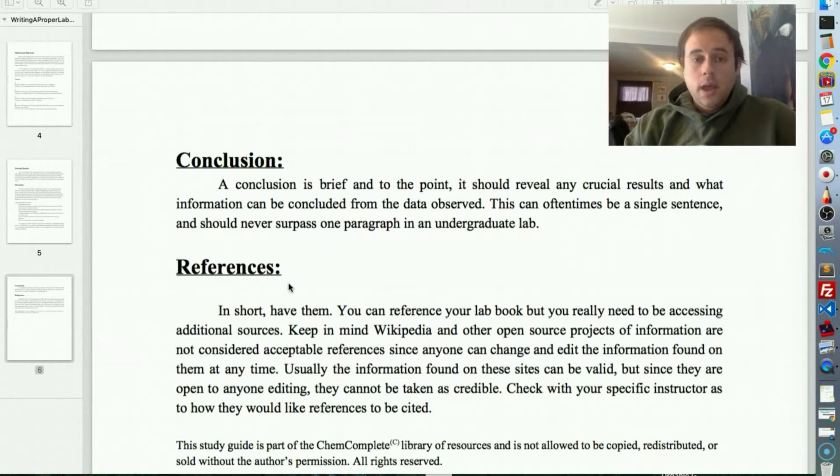So, then the conclusion. A conclusion is brief and to the point. It should reveal any crucial results and what information can be concluded from the data observed. This can oftentimes be even a single sentence. You don't always have to have a paragraph for this, but it should never surpass one paragraph in an undergraduate lab. Kind of like the abstract, the conclusion. It's like, okay, let's get to the point. What do we need to take away from this? You shouldn't be going on and on like you would in the discussion.